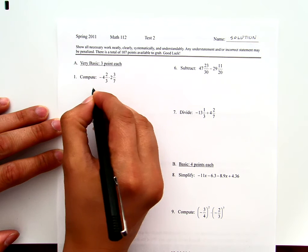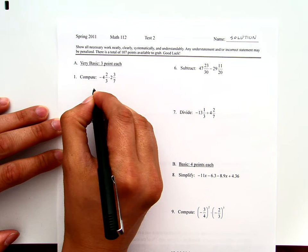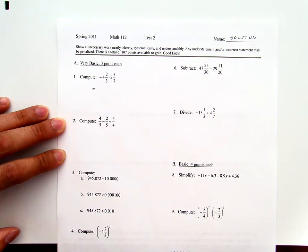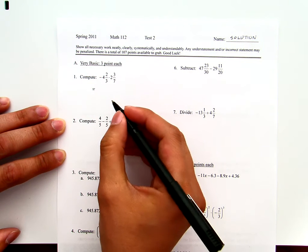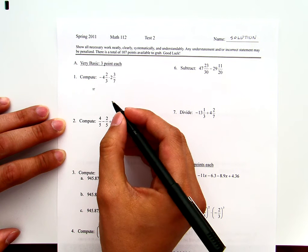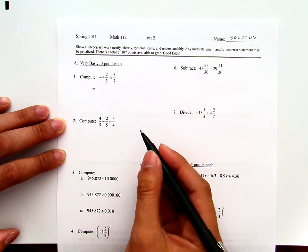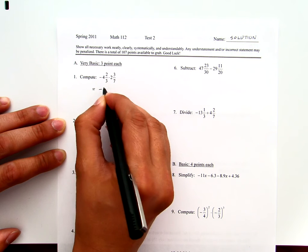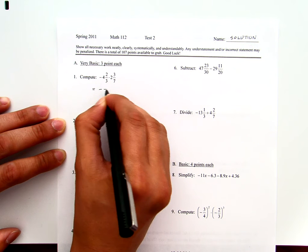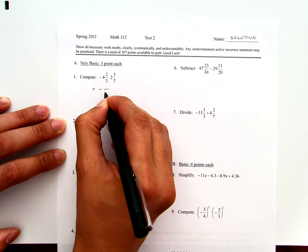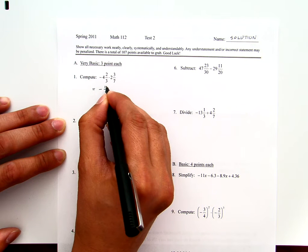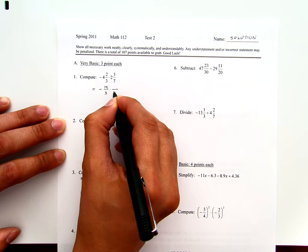Number one: To multiply mixed numbers, we will need to change them to improper fractions first, and then utilize the cross-canceling. This will be denominator 3, 14 on the top, times denominator 7, 17 on the top.